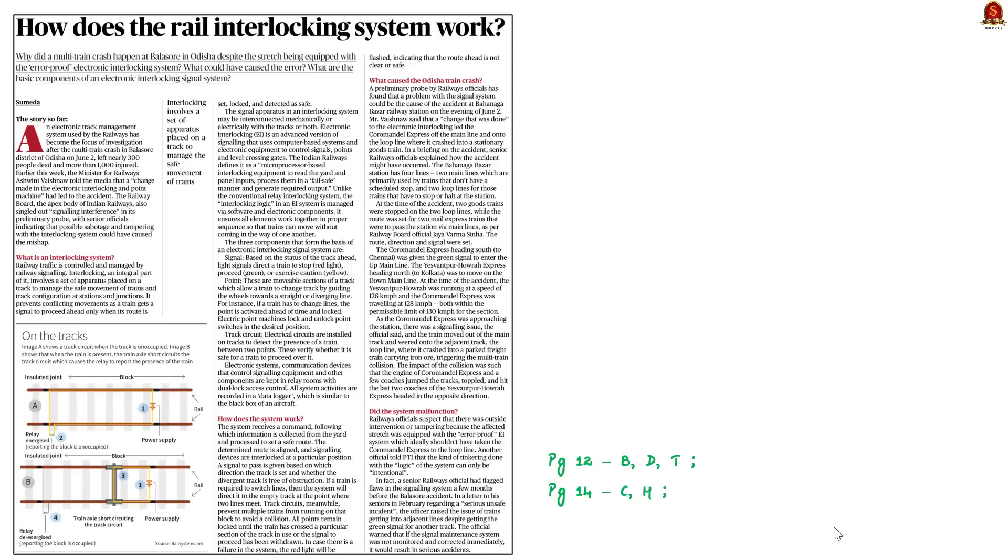This FAQ article explains about the working of rail interlocking system. Rail interlocking system is in news because of the multi-train crash incident that happened in the Balasur district of Odisha on June 2. Almost 200 people have lost their lives and more than 1000 people have been injured because of this accident. The Minister for Railways, Ashwini Vaishnav, told media that a change made in electronic interlocking and point machine had led to this accident. It is also said that there is a possibility of sabotage or tampering of the interlocking system that could have resulted in this unfortunate accident. So, in this context, we will understand about the interlocking system of the railways.